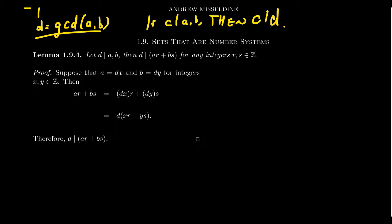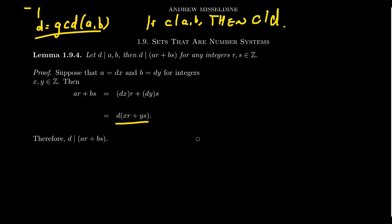To prove this lemma, take the assumption that D is a common divisor of A and B. Therefore, there exist integers X and Y such that A equals DX and B equals DY. Then, considering the linear combination AR plus BS, we substitute A equals DX and B equals DY, and rewrite the sum as D times (XR plus YS). Since XR plus YS is an integer, this tells us that D divides the linear combination AR plus BS.